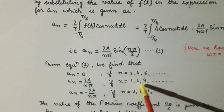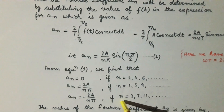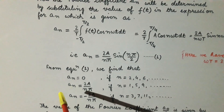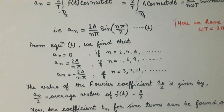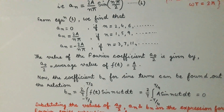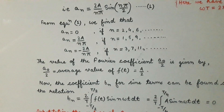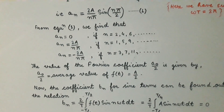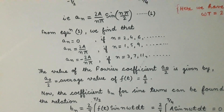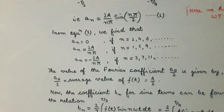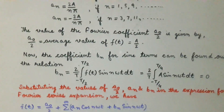If we substitute n = 1, 5, 9, … the value of aₙ comes out to be +2A/nπ. Similarly, if n = 3, 7, 11, … the value of aₙ is −2A/nπ. Next, we find the Fourier coefficient a₀/2, which is the average value of f(t), and from the given waveform we find that the average value is A/2.